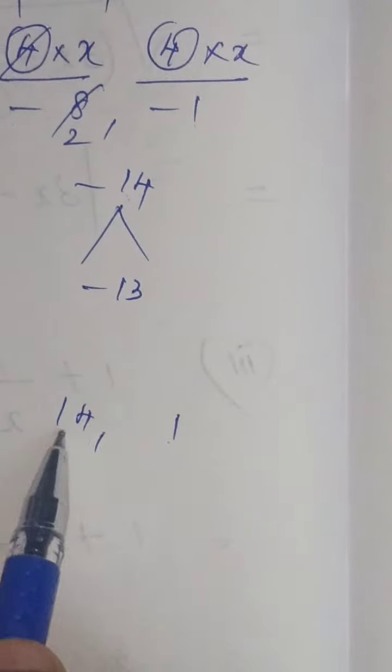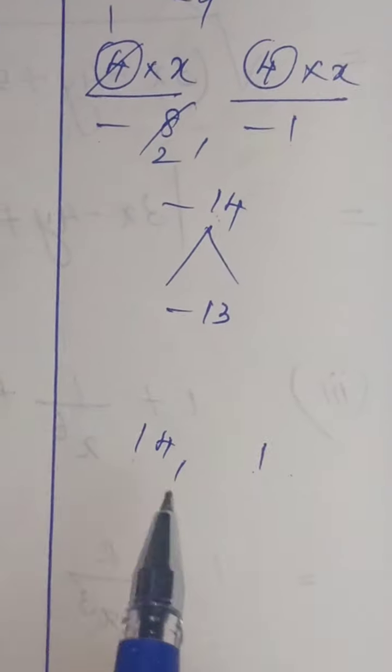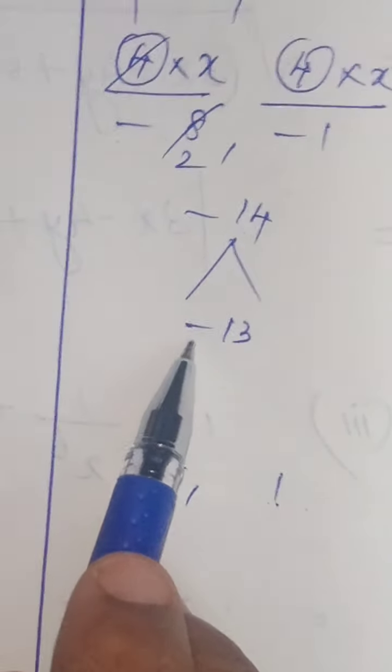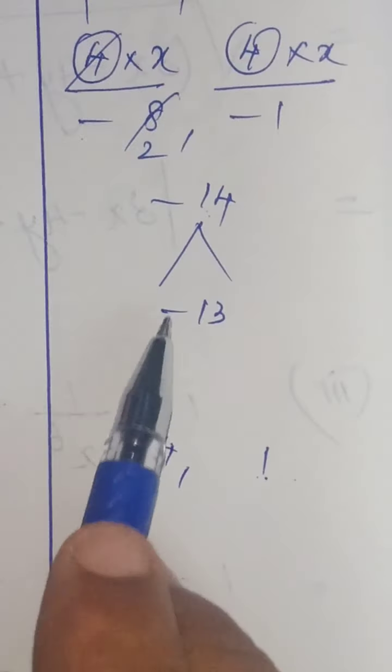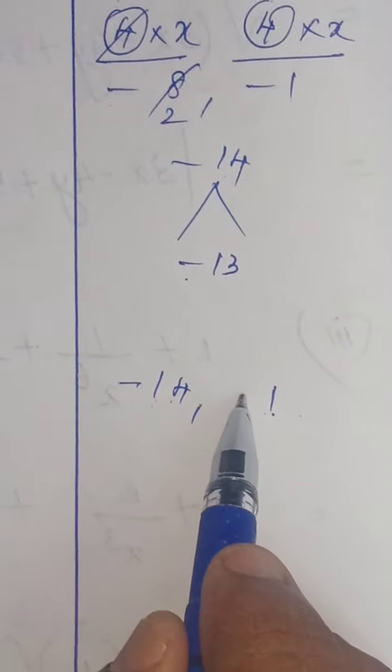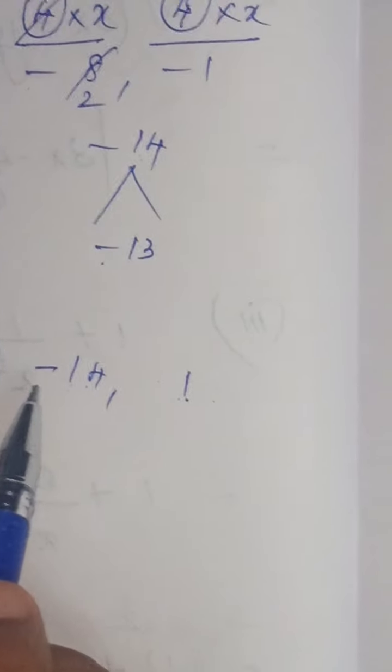So, that I have taken 14 and 1. For getting minus 13, the minus sign has to be introduced for the bigger number. So, minus 14. Then, plus 1. You can verify, minus 14 plus 1 that is equal to minus 13. If you multiply the two numbers, you will be getting minus 14.